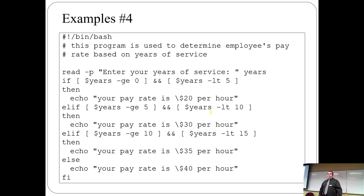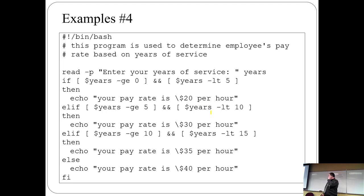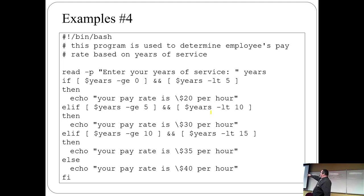Here's a longer example showing if/elif/then — a pay rate calculator based on years of experience. If years is greater than or equal to zero and less than five, you get paid $20/hour. If five to ten years, $30/hour. Ten to fifteen years, $35/hour. More than fifteen years, $40/hour. Make sure spaces are between every piece of the comparison operator, and don't forget the closing 'fi' — your if statement isn't complete without it.